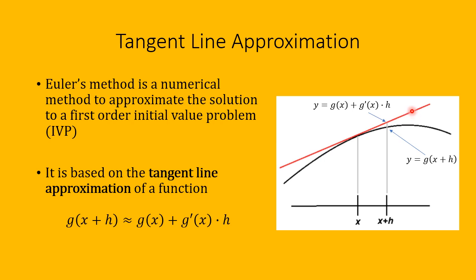Tangent lines have linear equations and thus are more easily computable. If we look at the point x plus h on the horizontal axis, g of x plus h is the true y-coordinate. Going up to the tangent line gives us g of x plus g prime of x times h. If h is small so these two x-values are close together, the difference between the y-values of these two points will hopefully be pretty small, because the curve g of x can be approximated quite accurately by this tangent line.